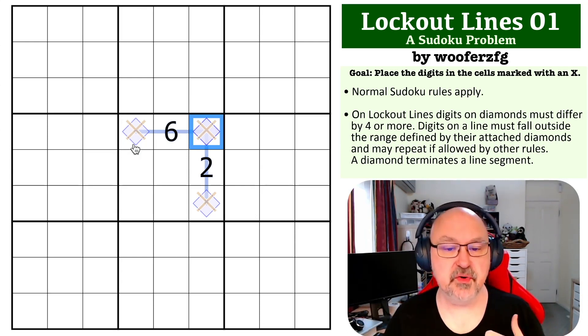So if I was to put a two here, the only thing that would be five or more apart would be a six or higher. And if I include, say, two seven, then I couldn't use two anyway.